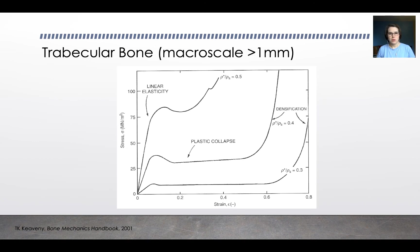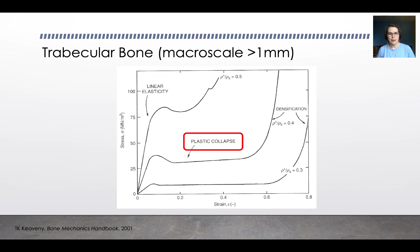The stress-strain graphs for trabecular bone in compression show a linearly elastic region, followed by a long region of plastic collapse from about 20% to 60% strain, where the struts start to fail. This is followed by a phase called densification, where the bone becomes packed and starts to carry load again in a crushed fashion.